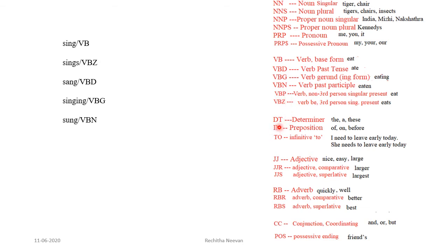DT is the tag for determiner — 'a' and 'the.' IN is for preposition. TO is for infinitive 'to.' In the sentences 'I need to leave early today' and 'She needs to leave early today,' the portion 'to leave' doesn't represent any grammatical information — it is like an infinitive. Such 'to' is known as infinitive 'to,' and 'to' can be used as a preposition also, as in 'I went to school.'